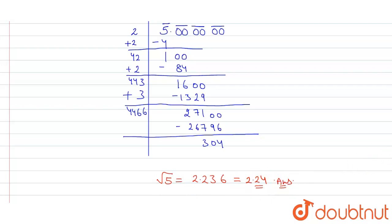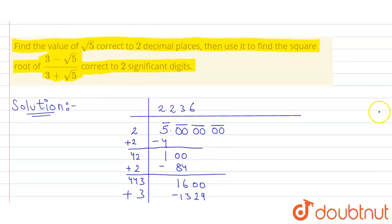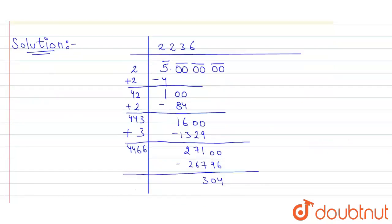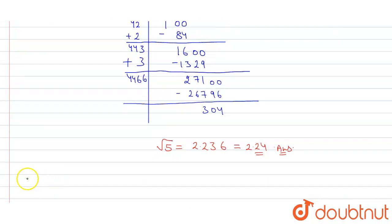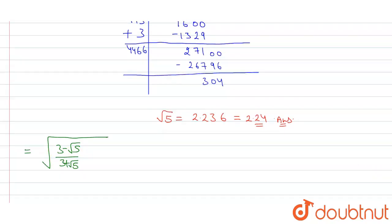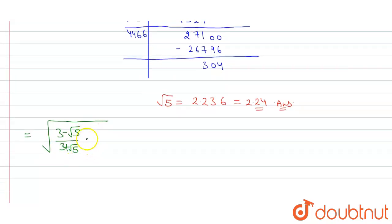Now we have to find the value of square root of 3 minus root 5 upon 3 plus root 5. So square root of 3 minus root 5 upon 3 plus root 5. Now firstly we will rationalize this. This will get 3 minus root 5 upon 3 minus root 5.